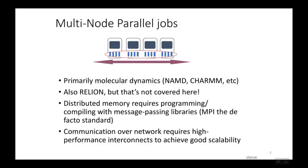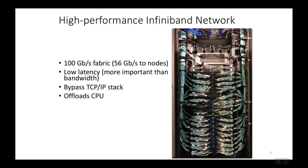Communication over the network requires a high-performance interconnect to achieve good scalability. Standard TCP/IP Ethernet networking is usually too high latency, meaning messages take too long to be delivered to communicate efficiently between numerous processes on different nodes. Fortunately, BioWolf uses a high bandwidth, low latency network technology called InfiniBand for multi-node communication, and all nodes on the multi-node partition are connected to the InfiniBand network. The InfiniBand network is a 100 gigabit per second fabric at its core, although the compute nodes themselves are only connected at 56 gigabits per second.